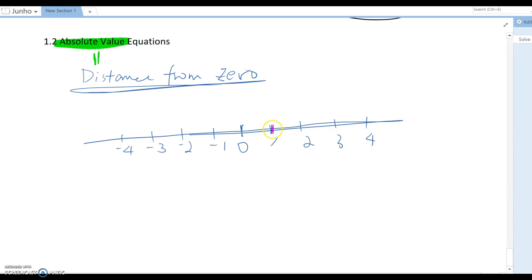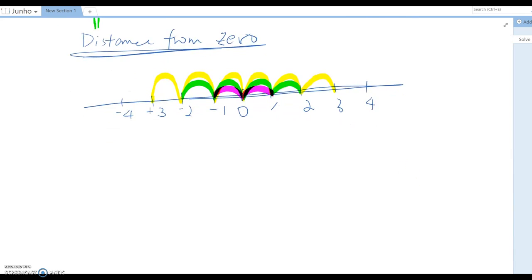We can say one is one unit away from zero. At the same time, negative one is also one unit away from zero. Two is two units from zero. At the same time, negative two is also two units from zero. Three is three units from zero. Same way, negative three is also three units from zero. Like this, you know, absolute value means we only care about the distance here.